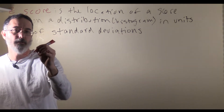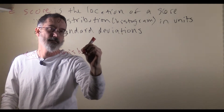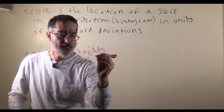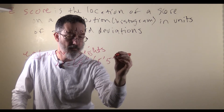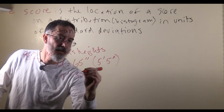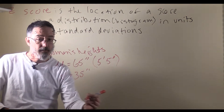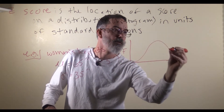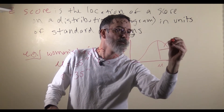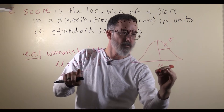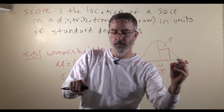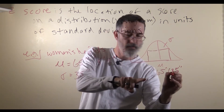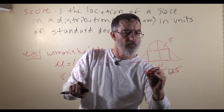Next we are going to look at an example with women's heights using the population. The population mean for women's heights is 65 inches, which is the same as 5 feet 5 inches. The standard deviation is 3.5 inches, and it is a normally shaped distribution. We can draw that here. One standard deviation above the mean — 65 plus 3.5 — gives 68.5 inches. One standard deviation below gives 61.5 inches.